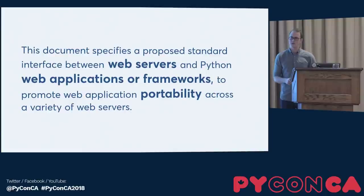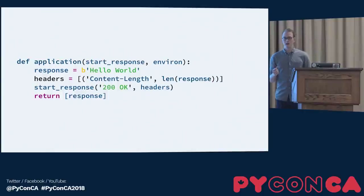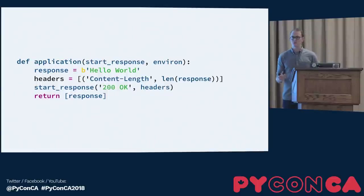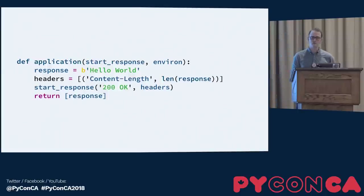Framework authors didn't have to know everything about HTTP. You just had to build something that implemented a central callable — by convention called "application" — that takes two arguments: an environ dictionary and a start_response callback. The start_response callback is invoked with the status code and headers you want to send back, and then you return an iterable of data that gets sent back to your users. In this case, we're simply responding with "Hello World."